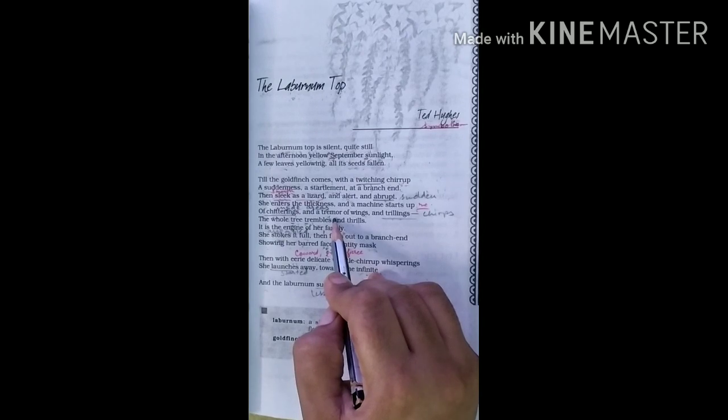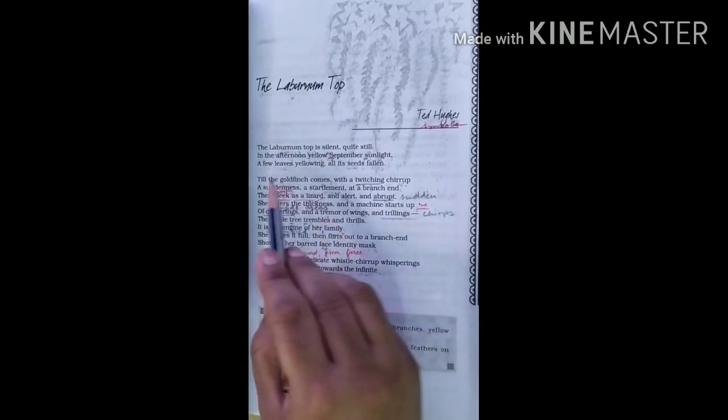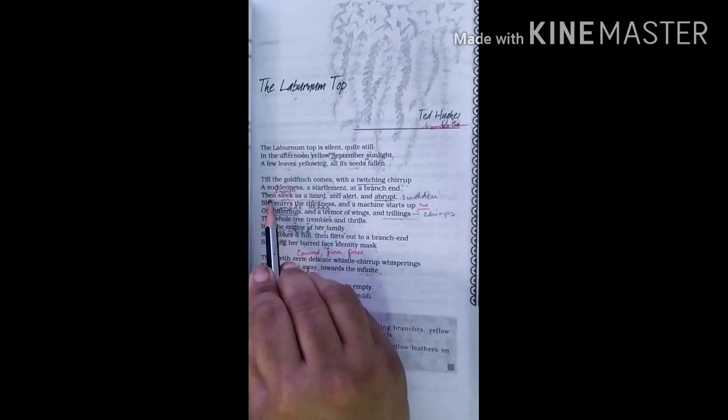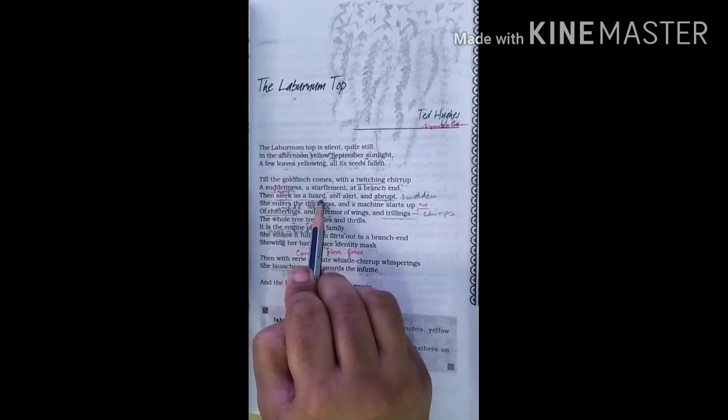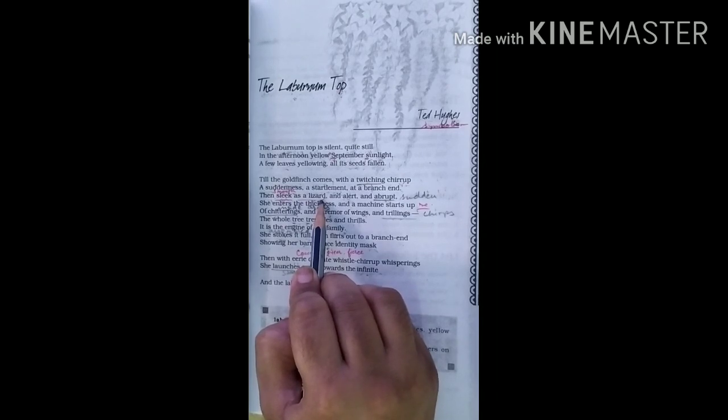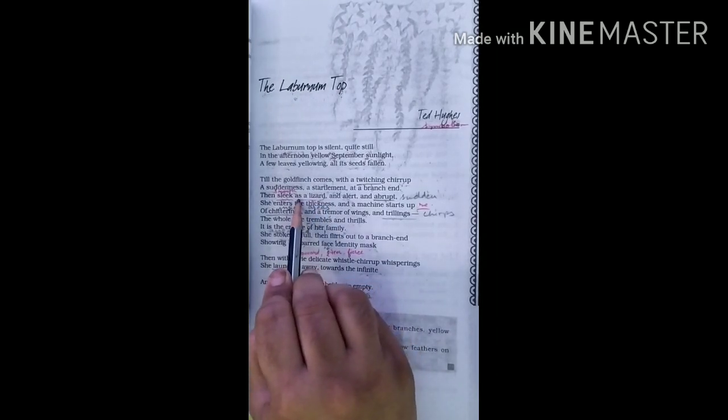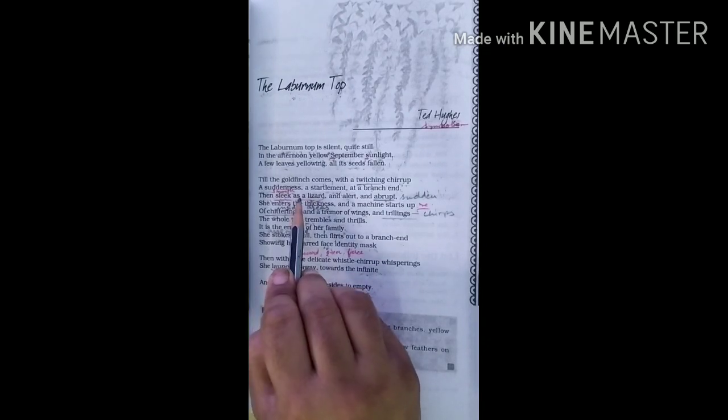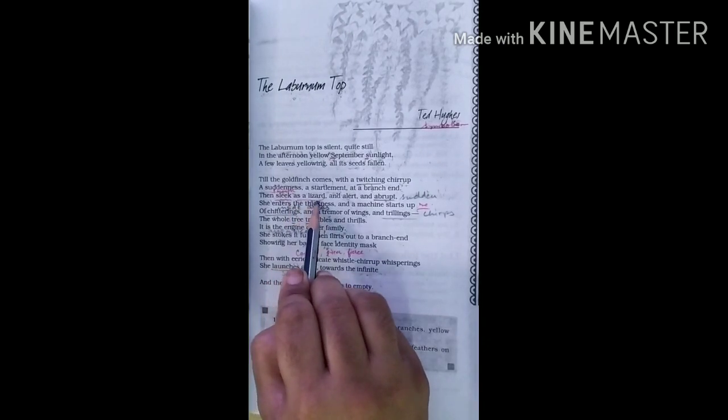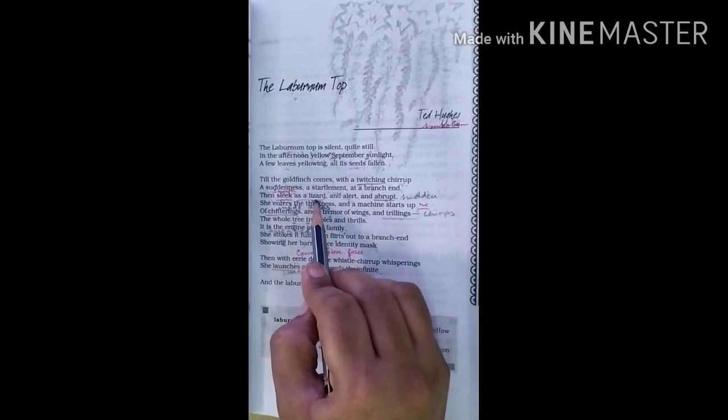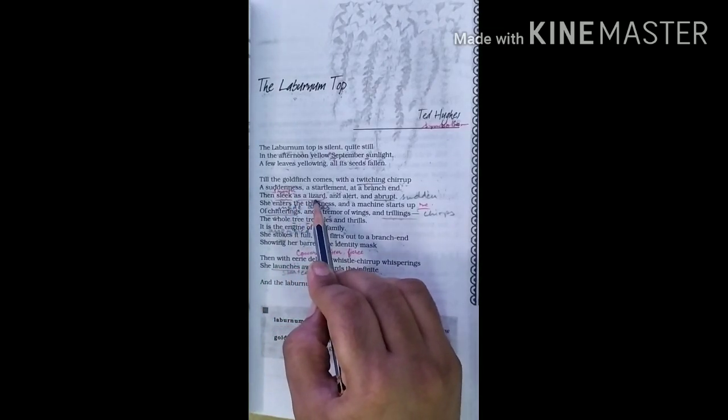Now the next one is simile. See second stanza's third line. Then sleek as a lizard. So comparison is used here. When we use direct comparison by the use of like and as words, we say that simile is there. So as a lizard, direct comparison is here. Simile.